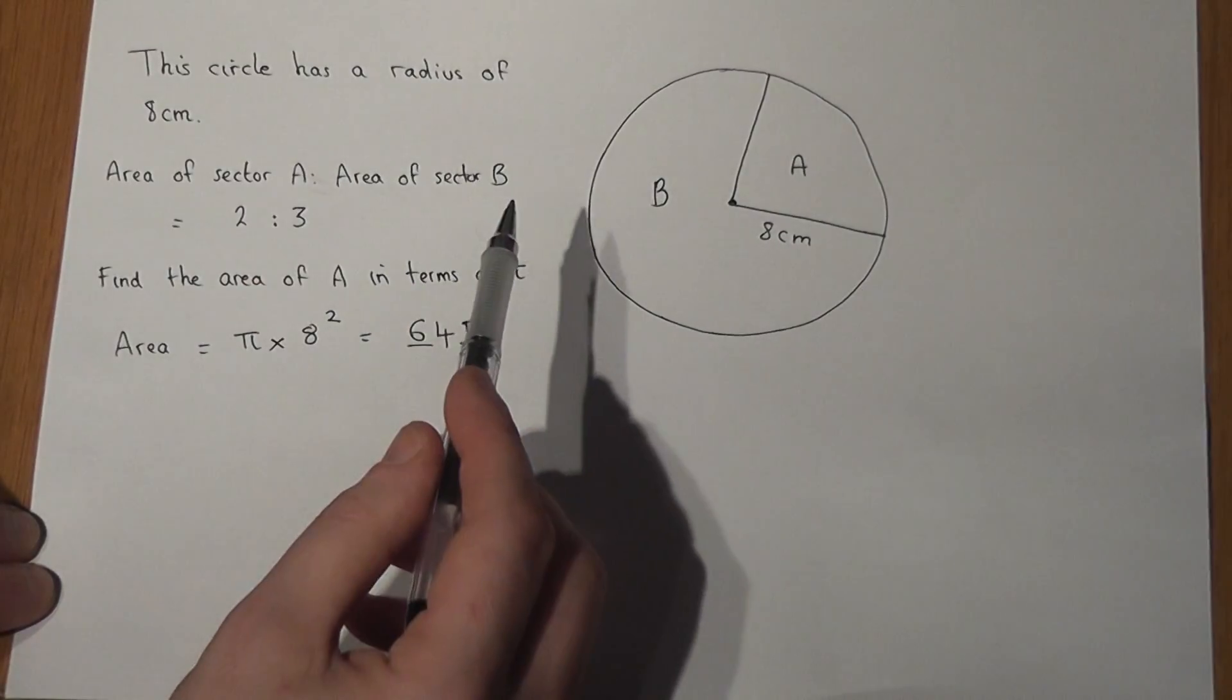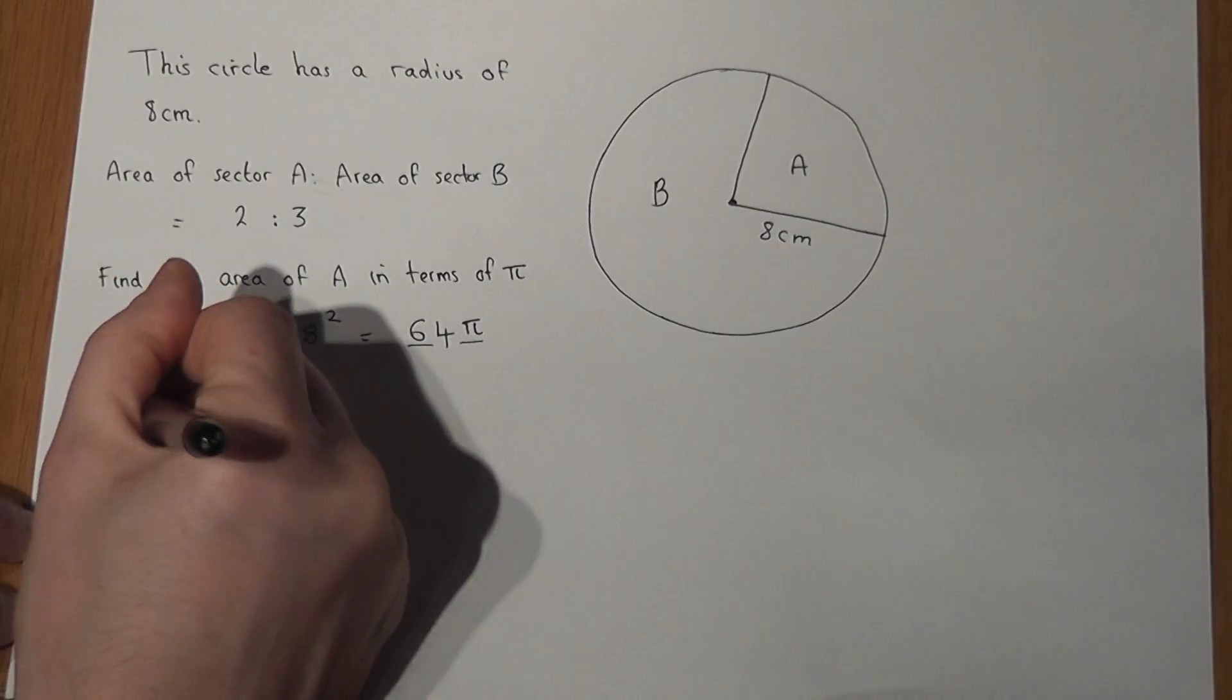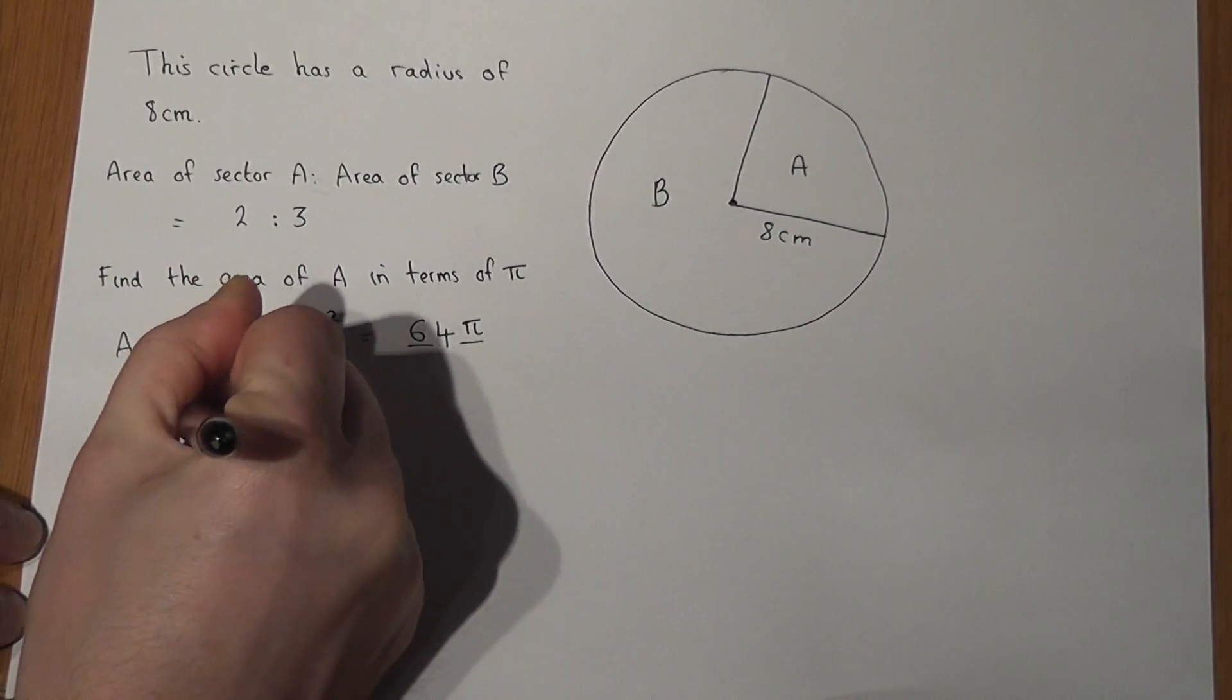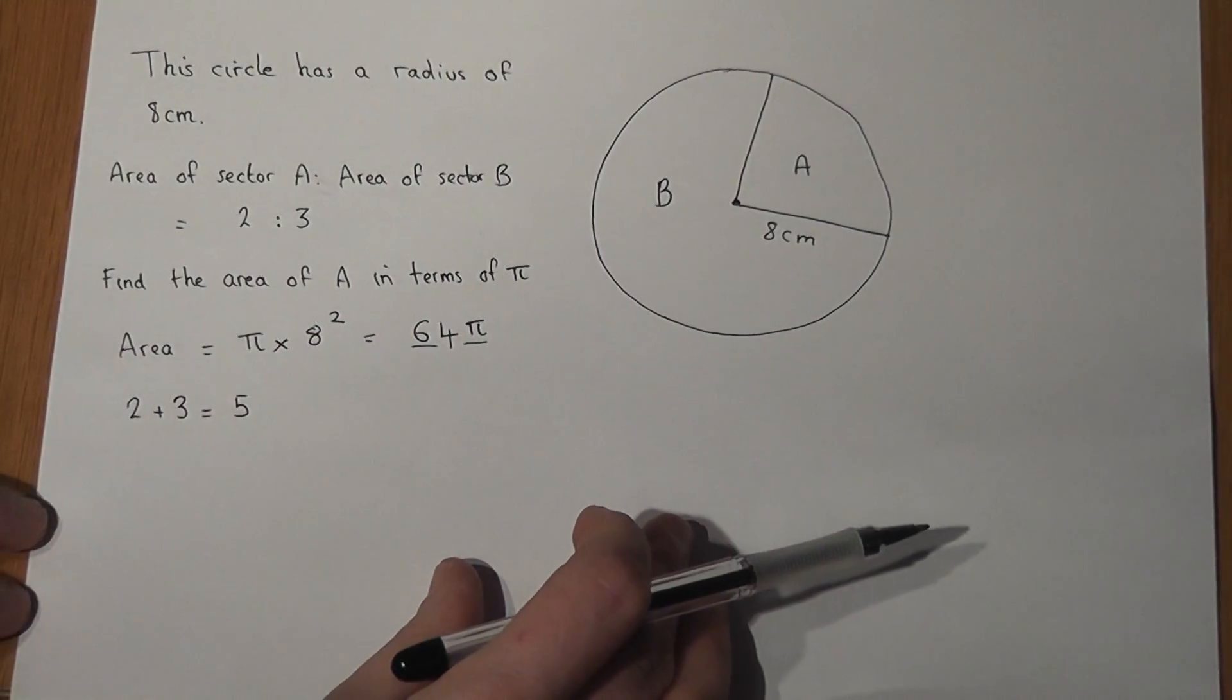A and B are in the ratio 2 to 3, so I do 2 plus 3 equals 5 to find the sum of the parts of the ratio.